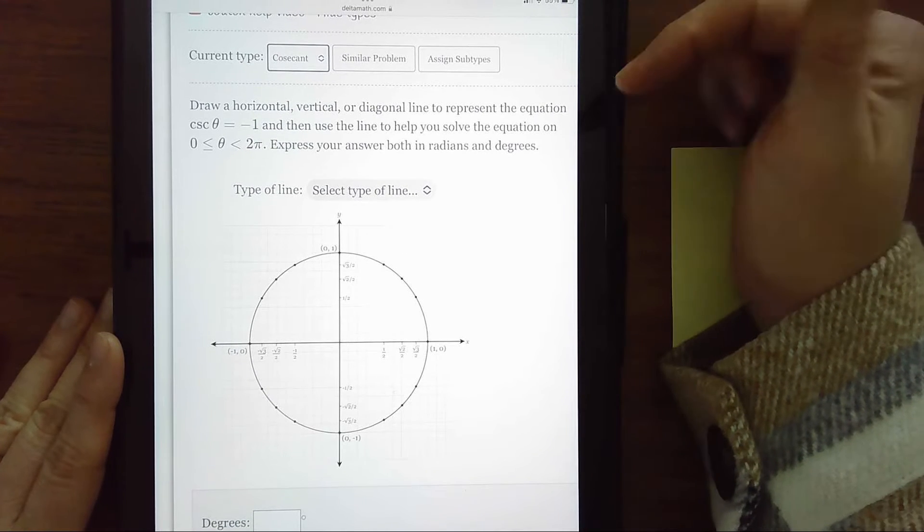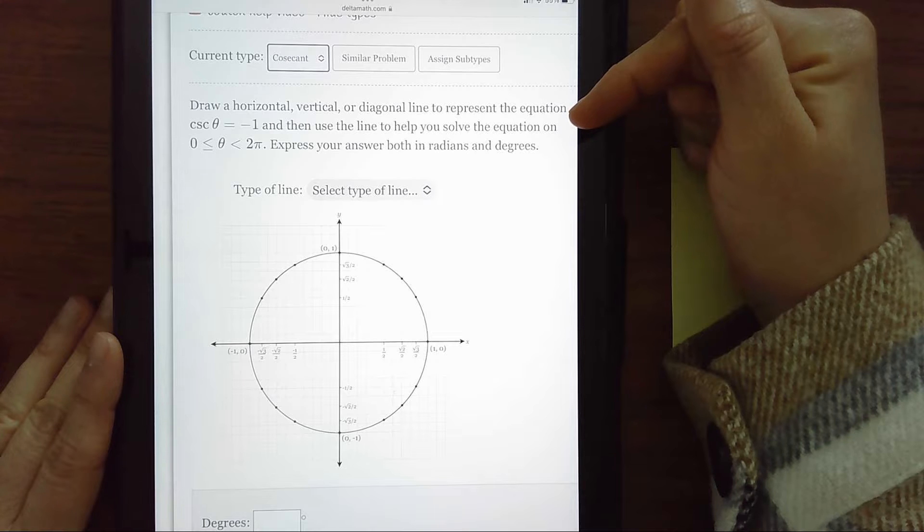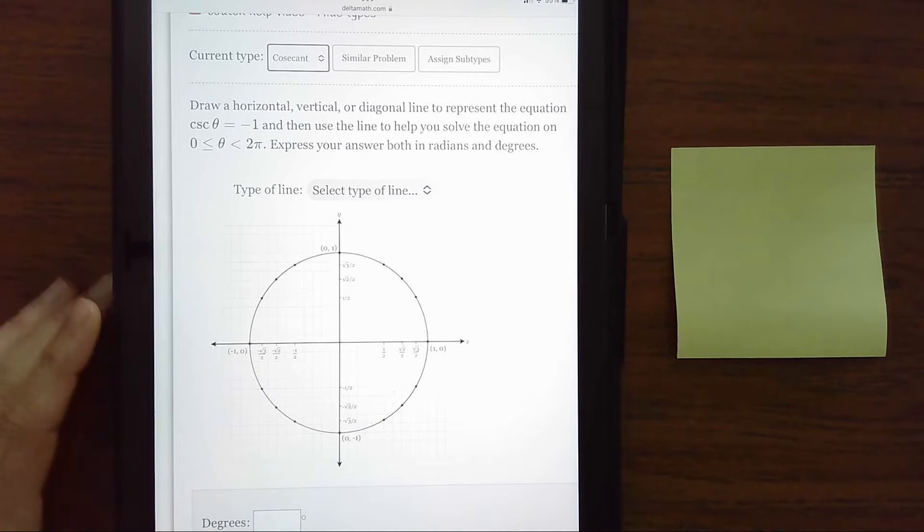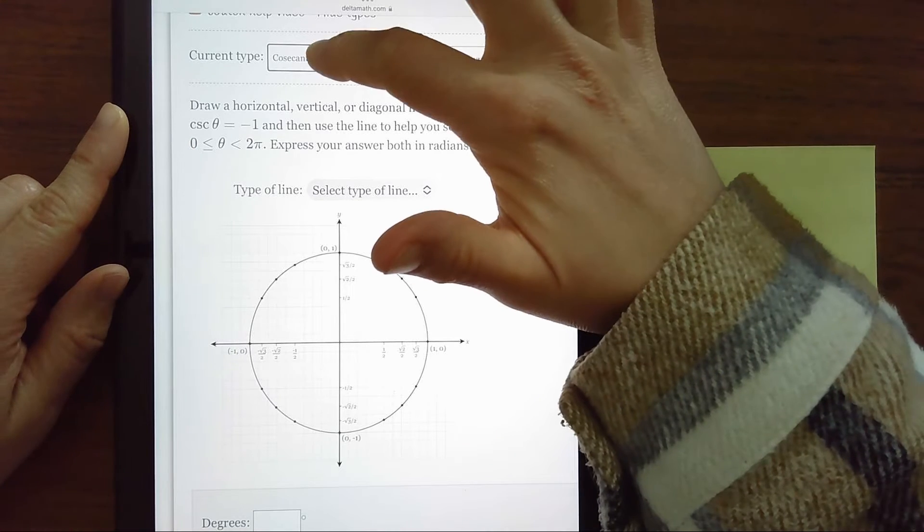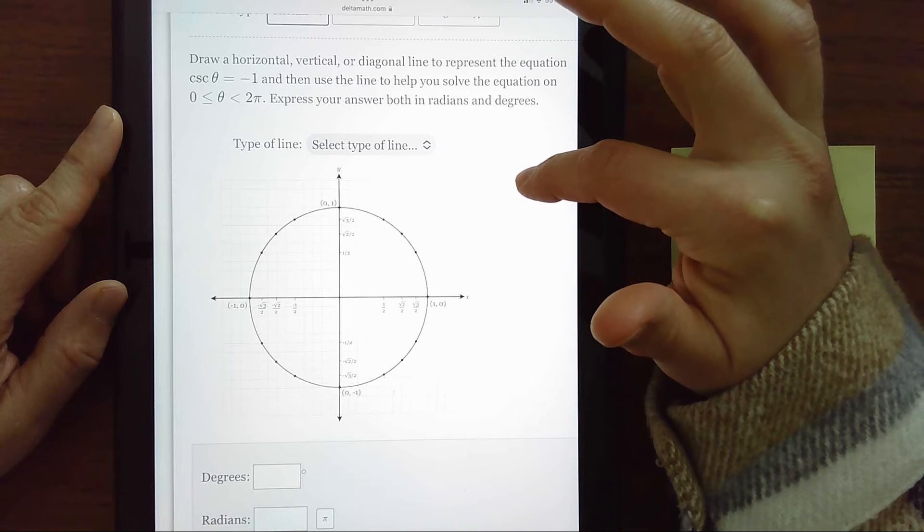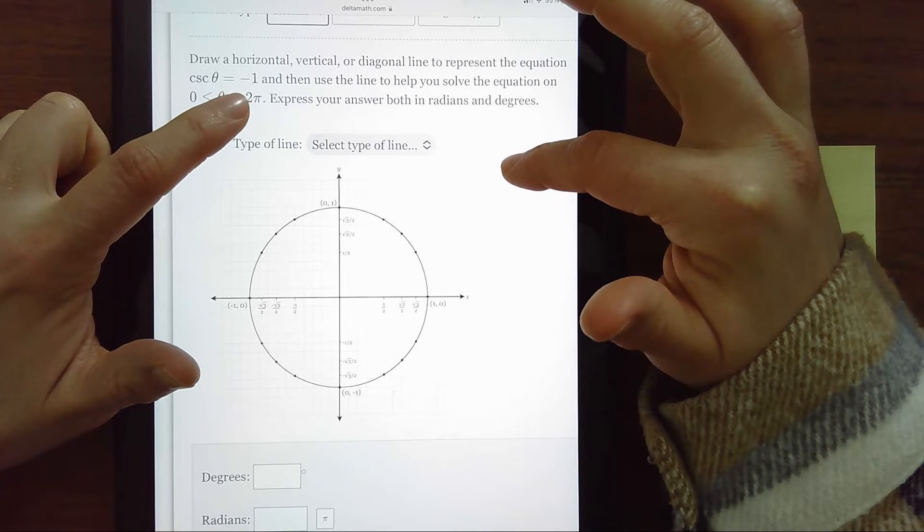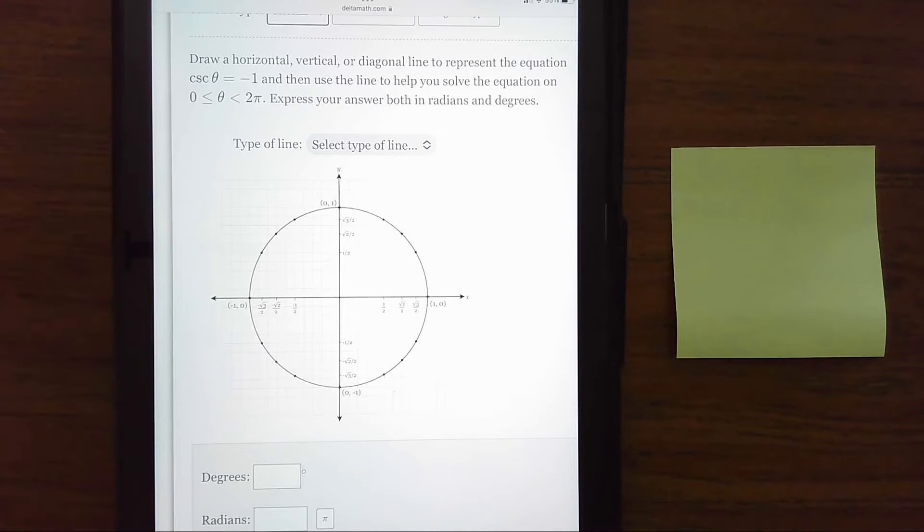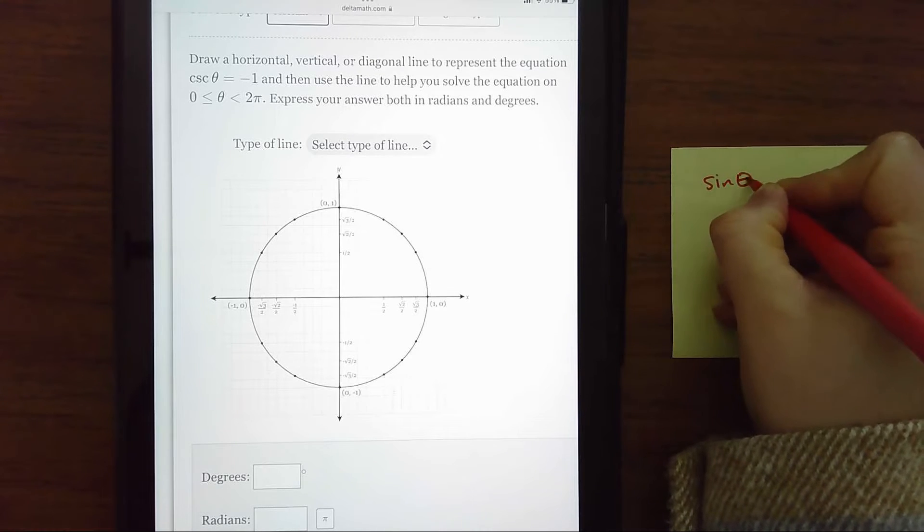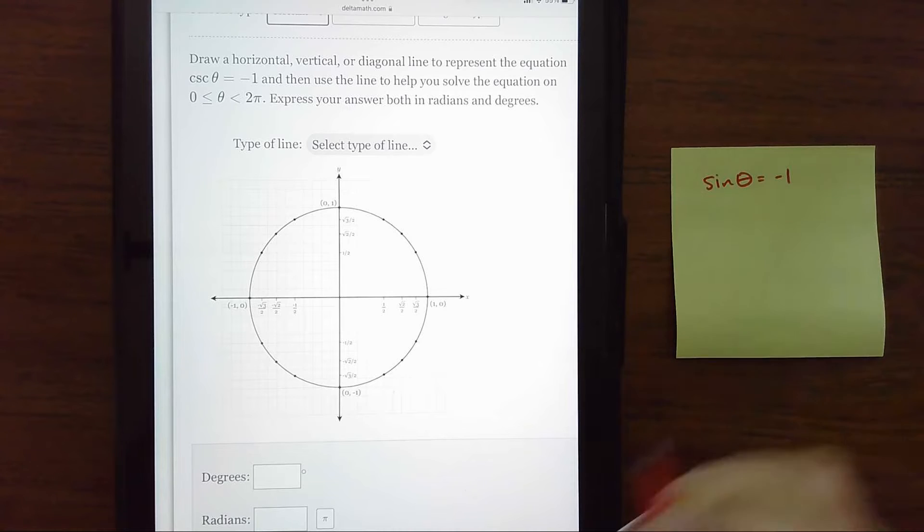They want us to draw a specific type of line to represent the equation cosecant of theta equals negative one. And so what I want you to remember is that cosecant is really the reciprocal of sine. So we need to change this to be the reciprocal. And with one, we can't make a reciprocal one. So sine of theta would still be negative one.